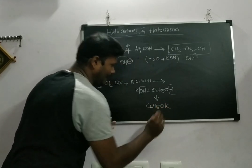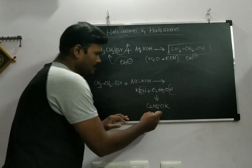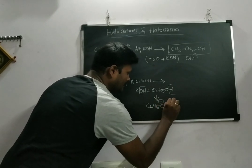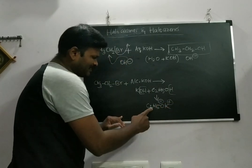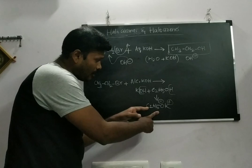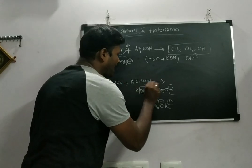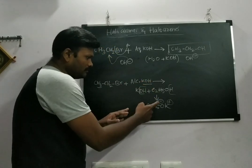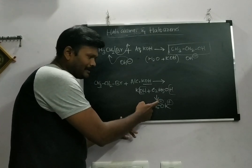C2H5OK, it's a conjugate base, like C2H5O- K+. The C2H5O- will act as a stronger base than OH-. In this case, this will be acting as a strong base. Now the base will always attack the beta hydrogen.